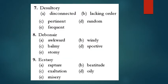Question seven: Desultory - lacking order, pertinent, random, frequent. Question eight: Debonair - awkward, windy, barmy. Sportive, stormy. Question nine: Ecstasy - rapture, beatitude, exaltation, oily, misery.